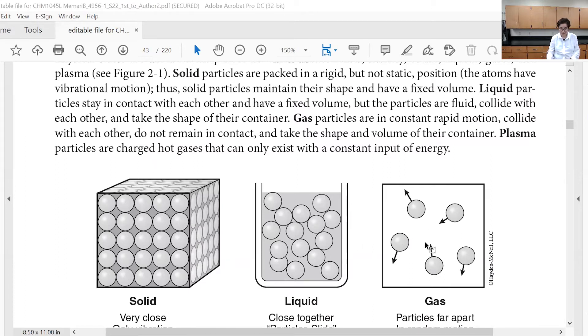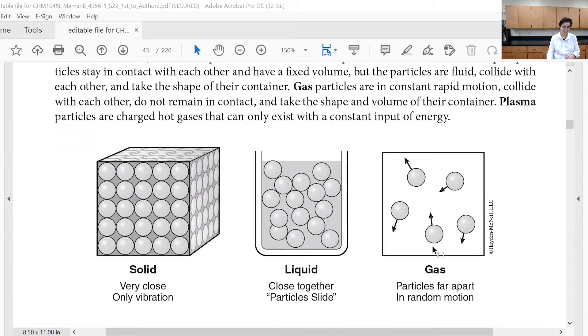And for the gas, you have a lot of space between the particles, and they are moving really fast. To change from solid to liquid, you apply heat. To change from liquid to gas, you apply more heat because gas molecules want to stay in constant motion.